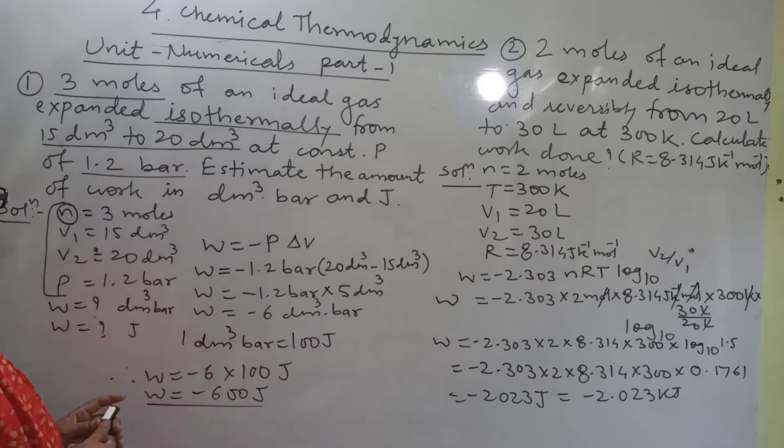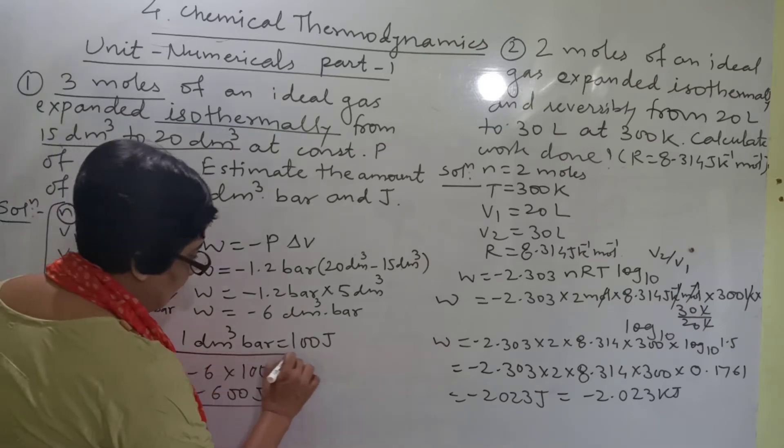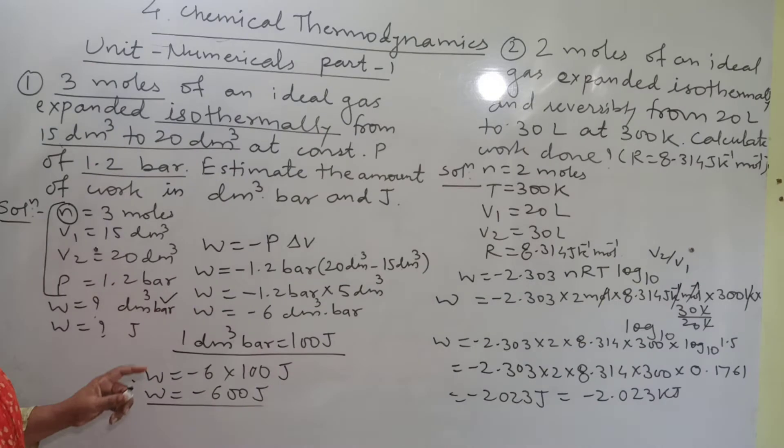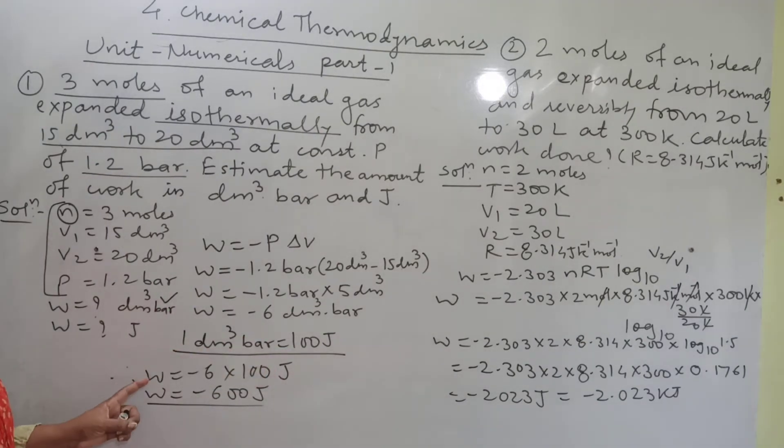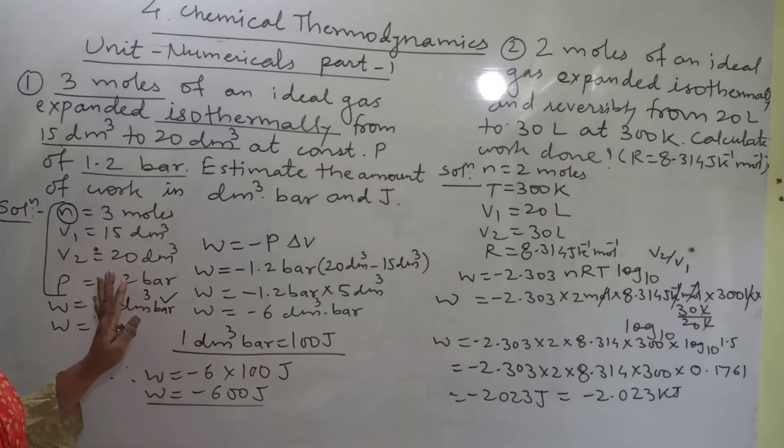Answer comes out to be minus 6 cubic decimeter bar. This is first answer, W in cubic decimeter bar. Now W is also asked in Joule. So you must know the conversion. Remember this conversion: 1 cubic decimeter bar equal to 100 Joule. So W equal to minus 600 Joule. This is the final answer and the problem is very simple.